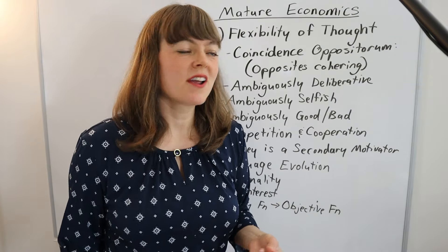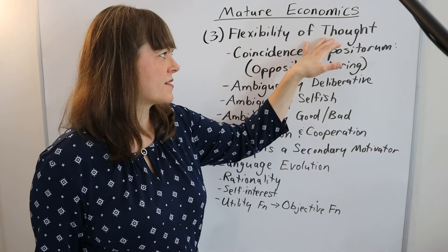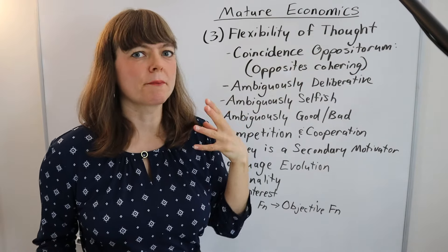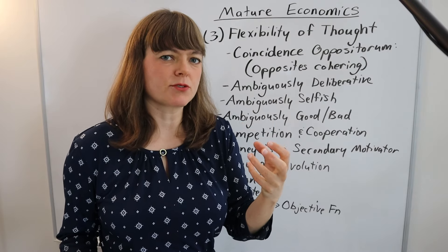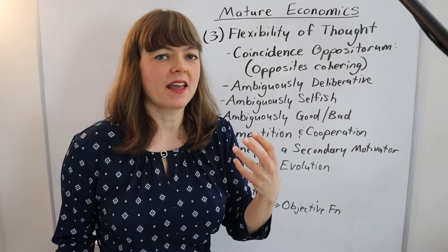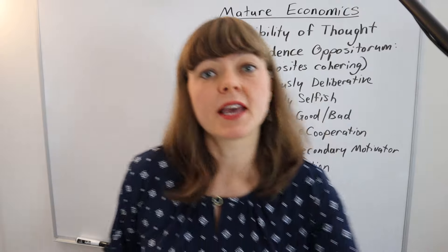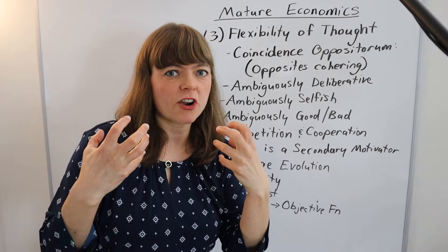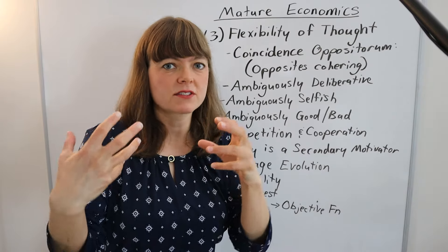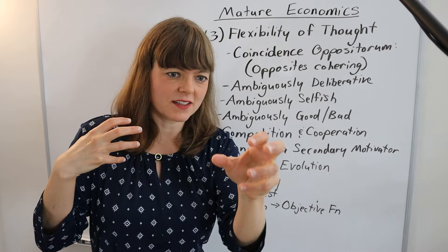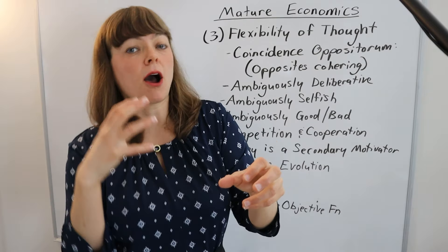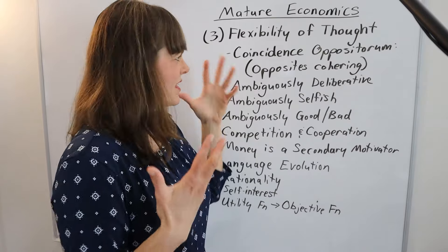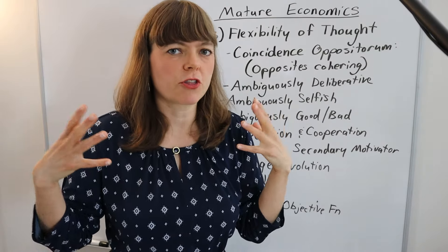The next approach is to develop a flexibility of thought. This book has a chapter called coincidentia oppositorum, which is the notion that really deep truths are often not binary — they may seem binary, and a really immature understanding would make them binary. But in fact, opposites cohere. If you zoom in or zoom out at different levels, something works at one level but the opposite is true at a different level of understanding. This gets at why you might want your thoughts to be flexible.